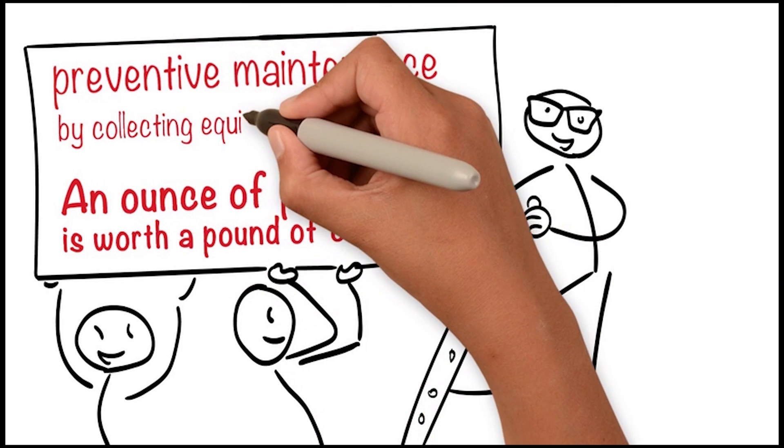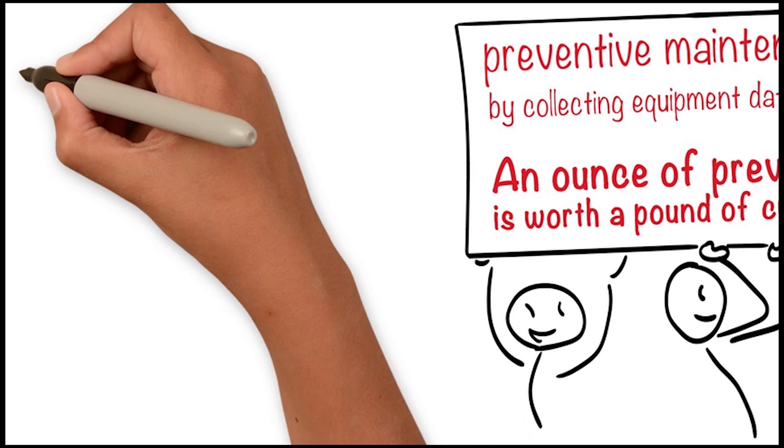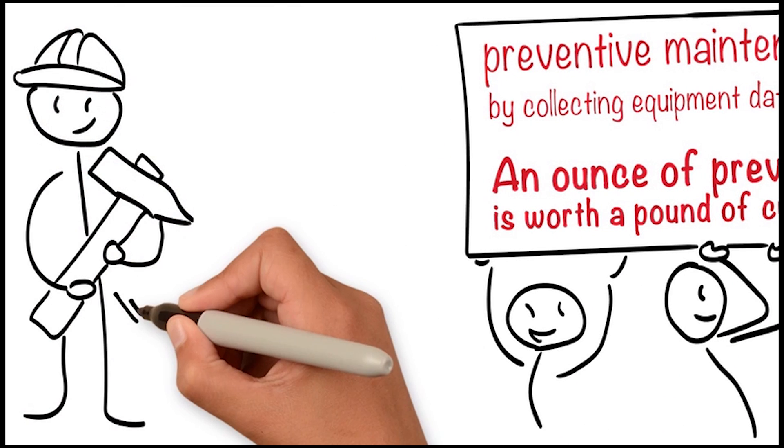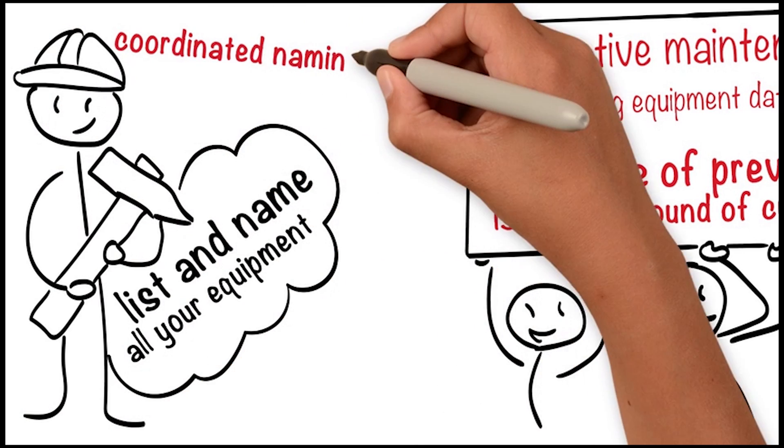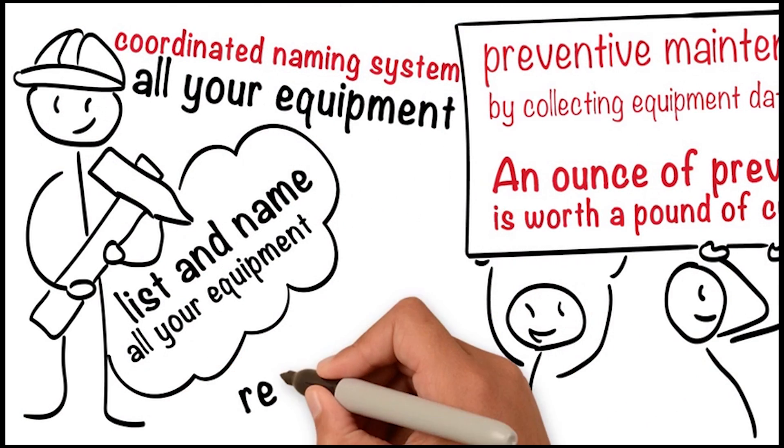Start the preventative maintenance process by collecting equipment data. First, list and name all your equipment. Give the equipment a unique name that is categorized and corresponding to a coordinated naming system. Adding this name to the equipment is recommended.